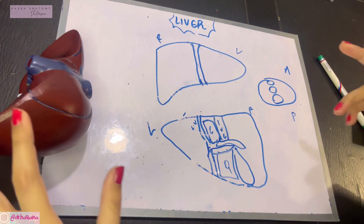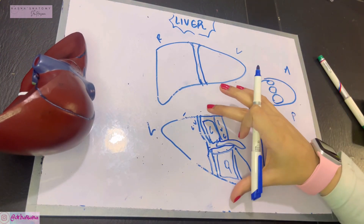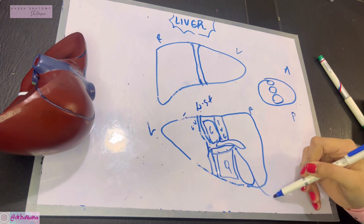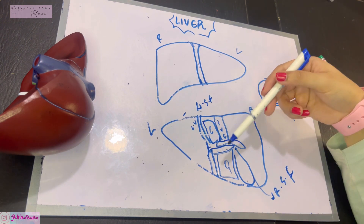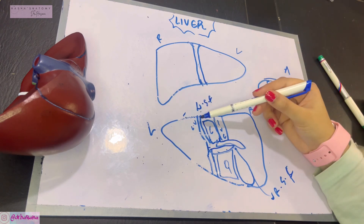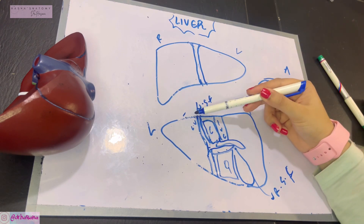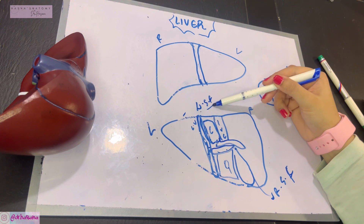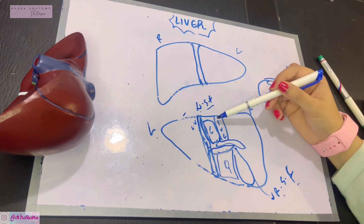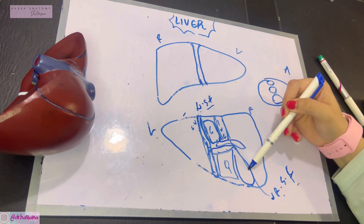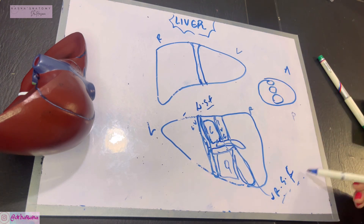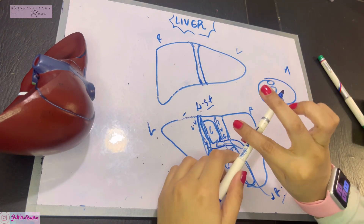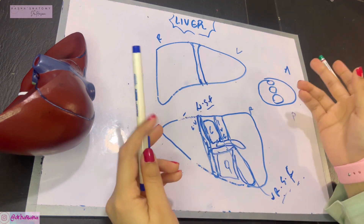Apart from the peritoneal reflections and visceral relations, there are two sagittal fissures on the posterior and inferior surfaces of the liver. The left sagittal fissure passes through the groove of the ligamentum venosum superiorly and the groove of the ligamentum teres inferiorly. The right sagittal fissure runs from the groove for the inferior vena cava in continuity to the fossa of the gallbladder. In the next video we'll cover the blood supply and functional segmentation of the liver.